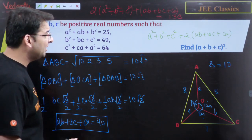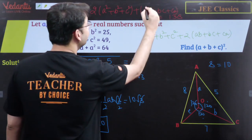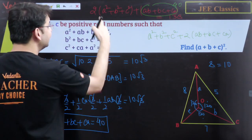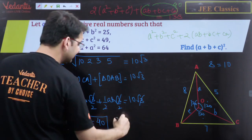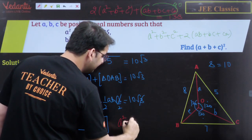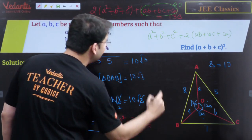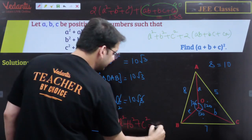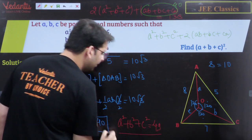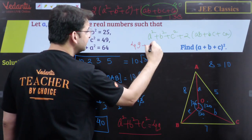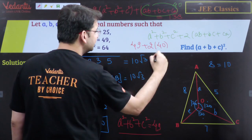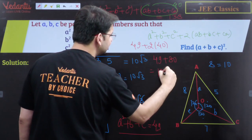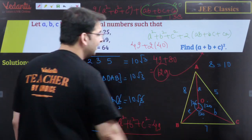Since AB+BC+CA = 40, we can substitute back. From 138 = 2(A²+B²+C²) + (AB+BC+CA) = 2(A²+B²+C²) + 40, we get A²+B²+C² = (138−40)/2 = 49. Therefore (A+B+C)² = 49 + 2×40 = 49 + 80 = 129. Our answer is 129.